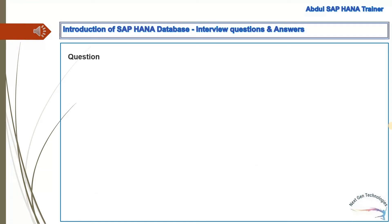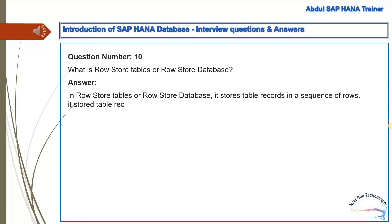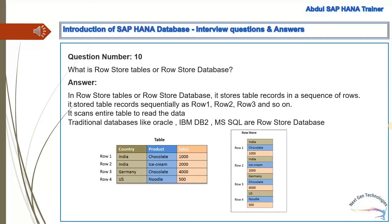Question 10: What are row store tables or a row store database? Answer: In row store tables, records are stored in a sequence of rows — row one, row two, row three, and so on. It scans the entire table to read data. Traditional databases like Oracle, IBM DB2, and MS SQL are row store databases.